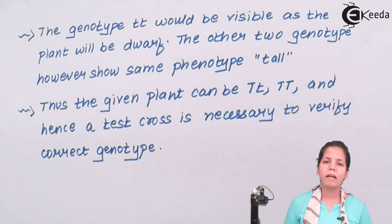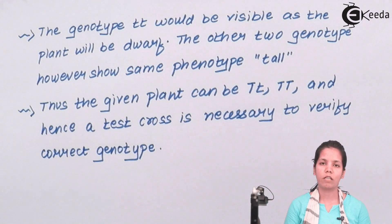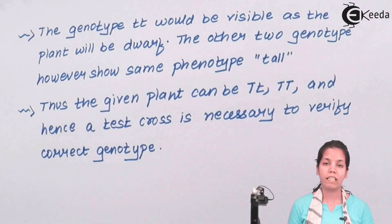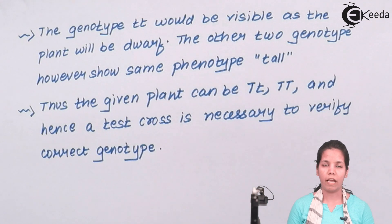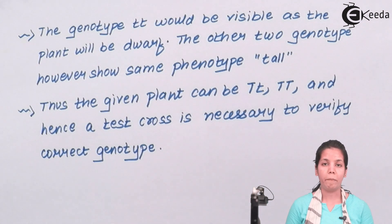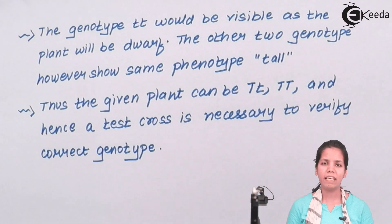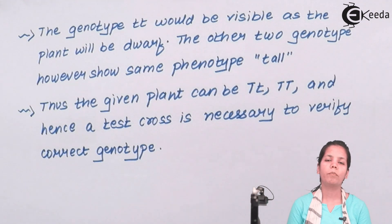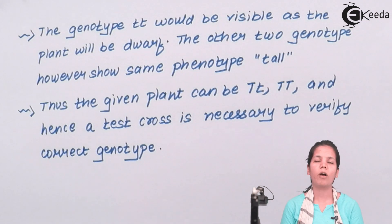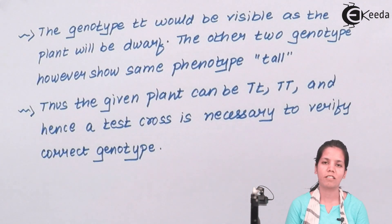In this part of the chapter, what we covered was test cross and how it was necessary when you have three options — homozygous dominant, heterozygous, and homozygous recessive. Mendel did these crosses just to verify the genotypes when there was ambiguity. I hope you are clear with this concept of test cross. Thank you.